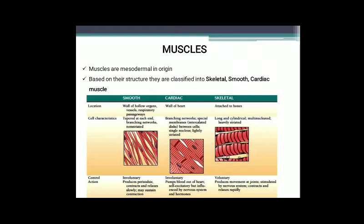Cardiac muscle, as the name indicates, is found in the heart. Skeletal muscles are attached to two bones. The smooth muscles are tapering at their ends, have a branching network, and they are non-striated; they do not contain light and dark bands.